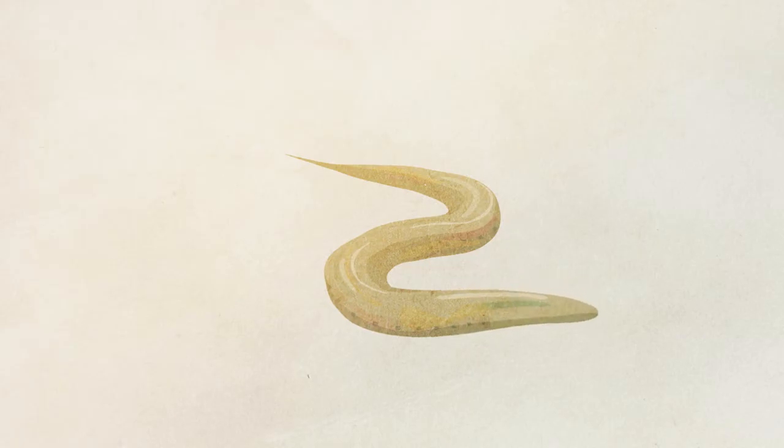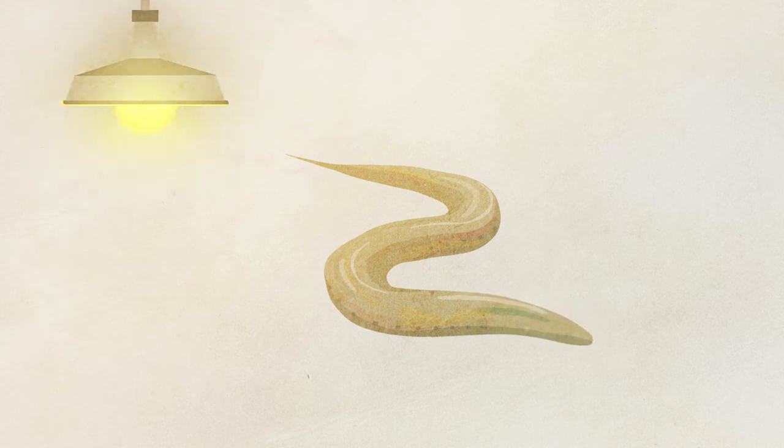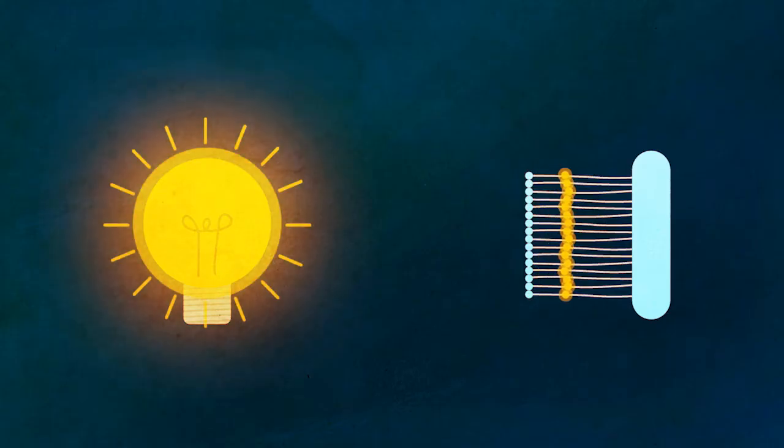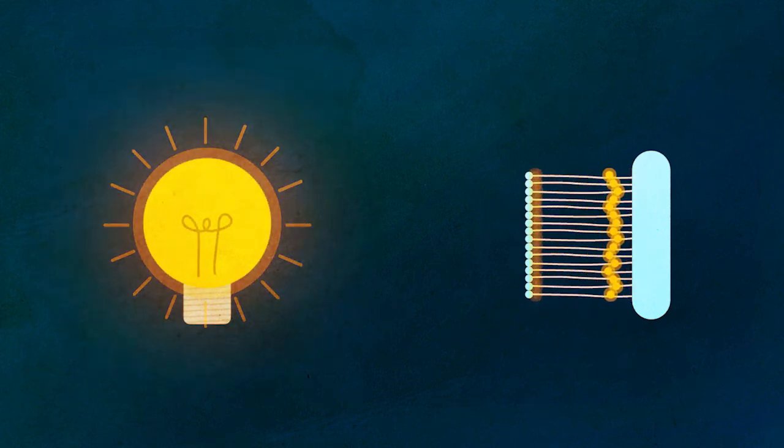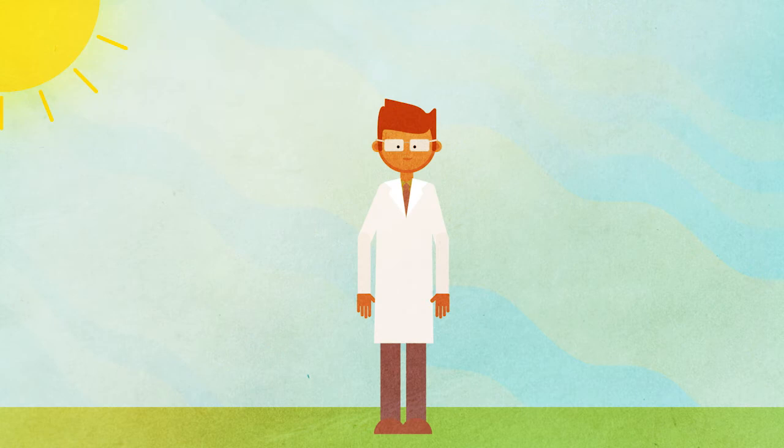For example, his lab showed that even though these tiny worms don't have eyes, they still respond to flashes of light. The researchers also discovered a new light receptor in the worms that's 50 times more efficient than the rhodopsin in the human eye.